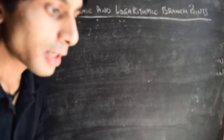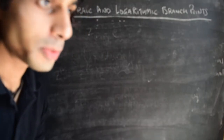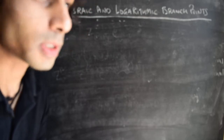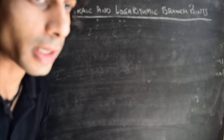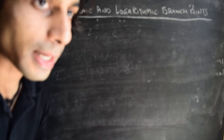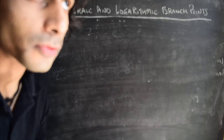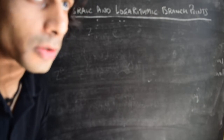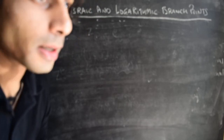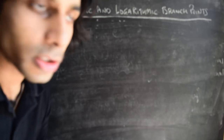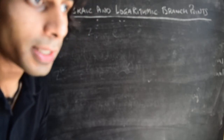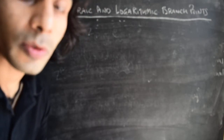Hi there and welcome back. In the previous videos, we have been talking about branch points — the different kinds of branch points, algebraic and logarithmic branch points. One example of an algebraic branch point is a function of the form z to the power 1 over n, where you have a branch point at z equals 0, and it's an algebraic branch point because it has a finite number of branches.